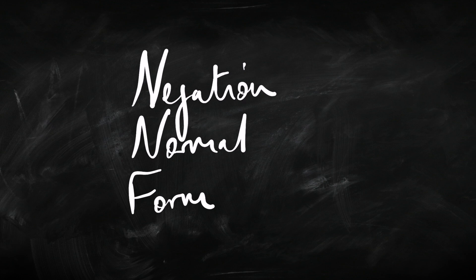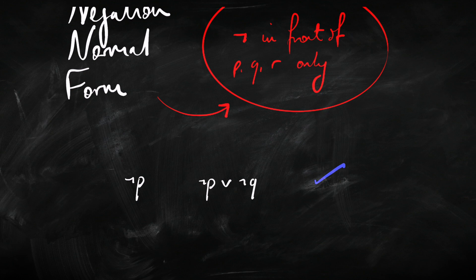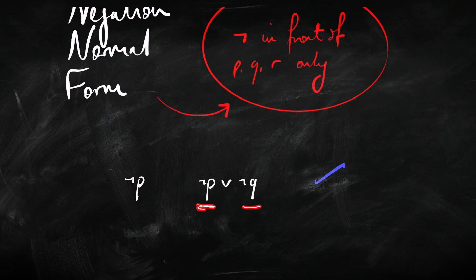Let's begin with the simplest case: negation normal form. A sentence is in negation normal form when, if there are any negation symbols in that sentence at all, they appear immediately in front of the P's, the Q's, and the R's. So any negation symbol has to be immediately in front of a primitive sentence letter. These sentences are in negation normal form because here we have a negation and it's immediately in front of P, and the negations are immediately in front of P and Q.